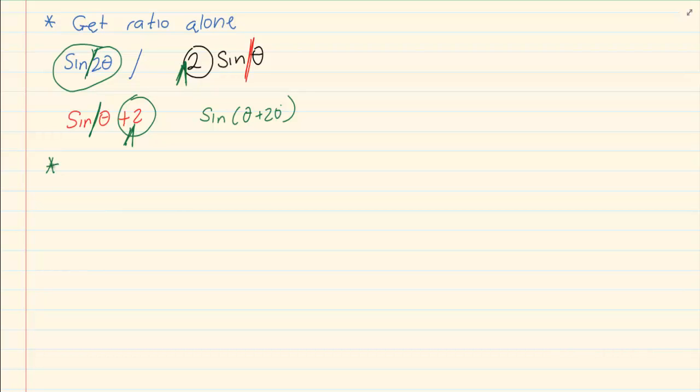The second thing is once the ratio is alone, you're going to press shift, the ratio, and the value. If after the ratio, there was any form where theta was not alone, then you would solve for theta. Right, let's do a few examples.